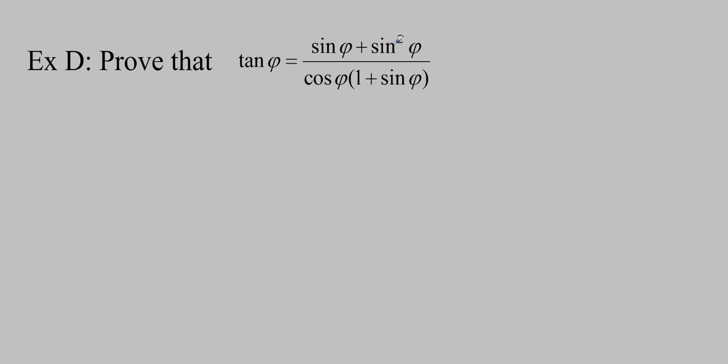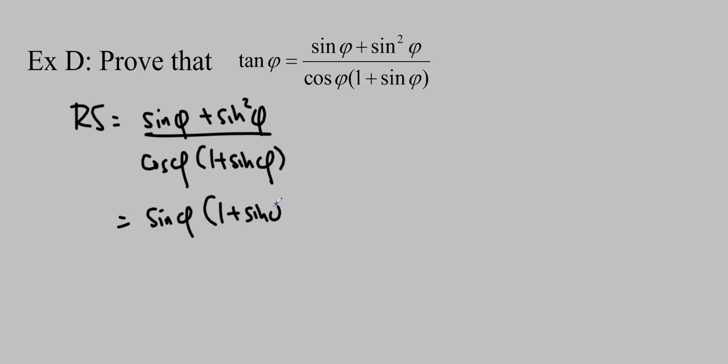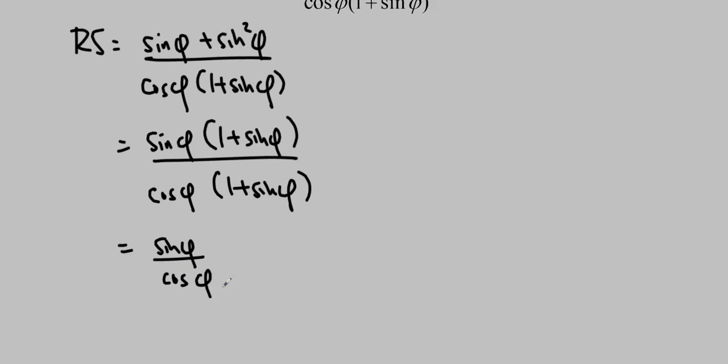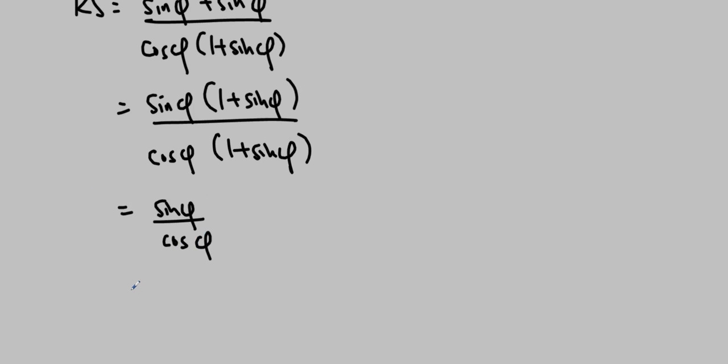In our last question, we're going to use phi. You can see that this side is less complicated than this side, so I'm going to choose the right side. Right side is equal to sin phi plus sin squared phi over cos phi times 1 plus sin phi. Now I can see that I can common factor sine phi out, so I'm going to do that. Sin phi times 1 plus sin phi over cos phi times 1 plus sin phi. Now that I've common factored that out, I can cancel them, so I'm going to actually get sin phi over cos phi. By the definition that we found before, we know that sin over cos is tan, so that's tan phi. This is the left side, so the left side is equal to the right side, and we're done.